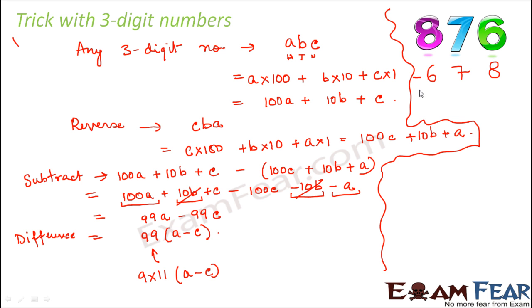Now let's find the difference between the two numbers. 6+8 is 14, 16. 7 becomes 1. So 198 is the difference.